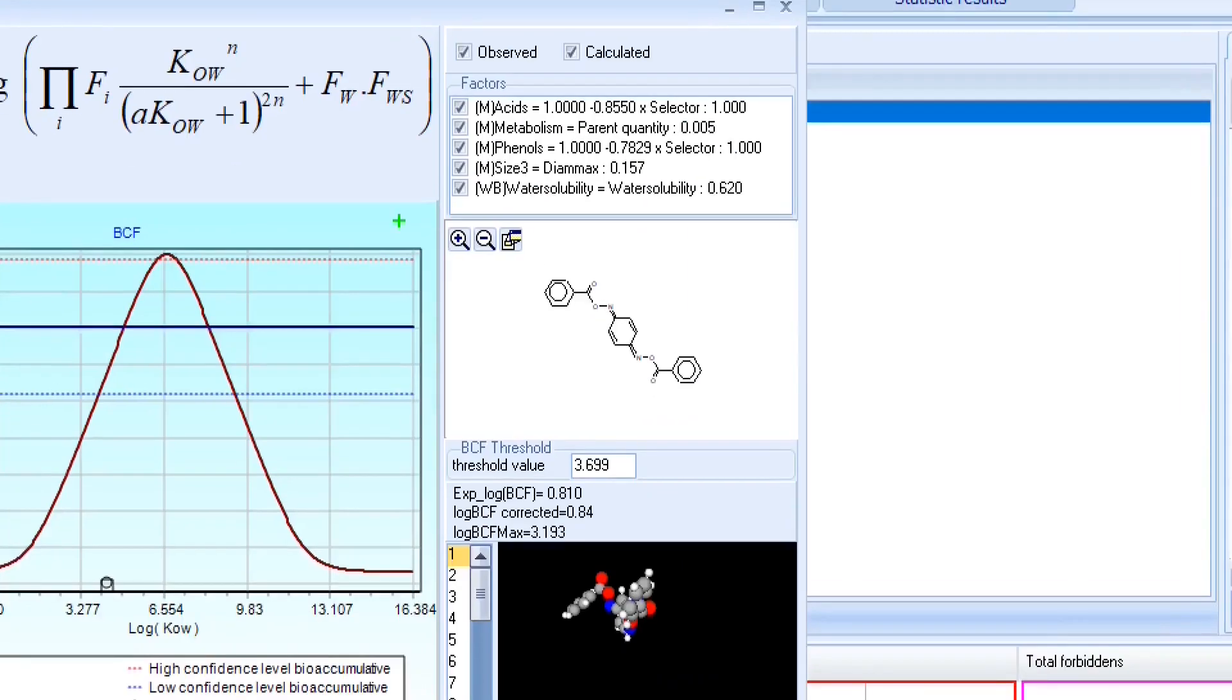We can conclude that two of the mitigating factors, size and metabolism, reduce the BCF max of the target chemical, with metabolism being the most significant factor.